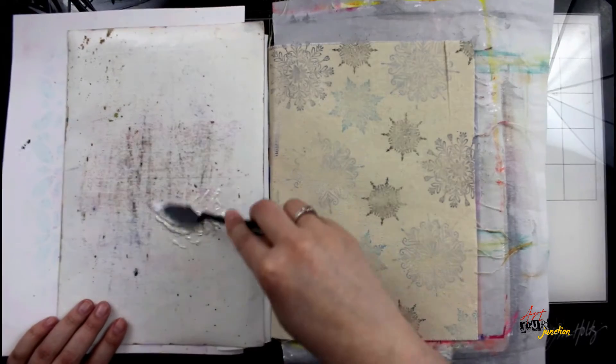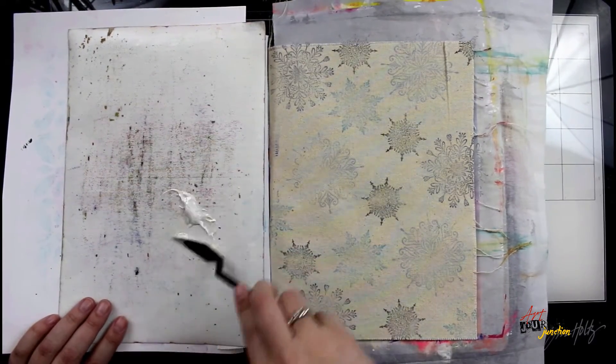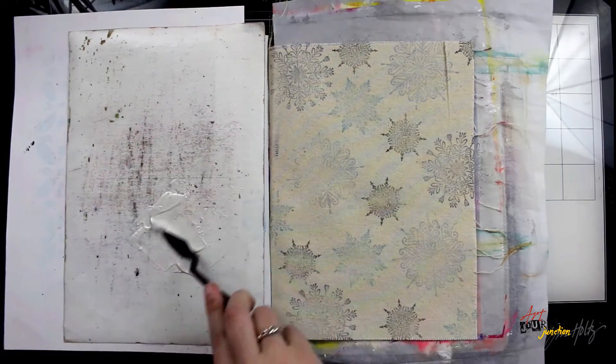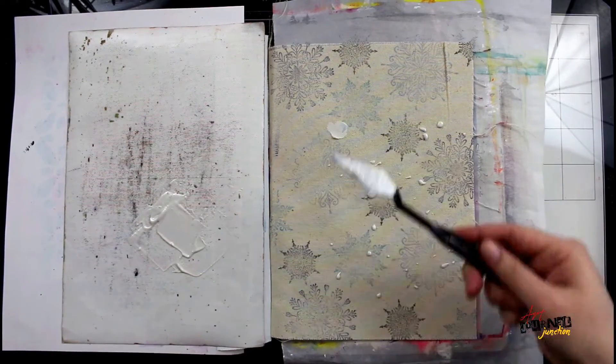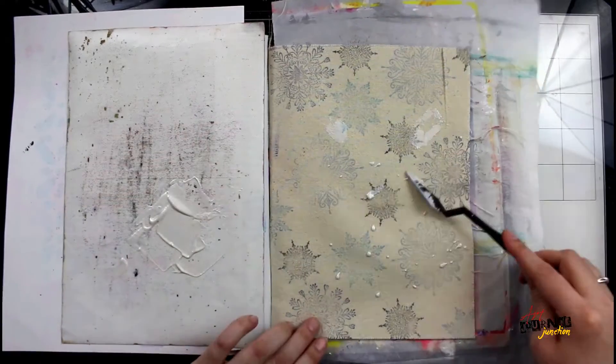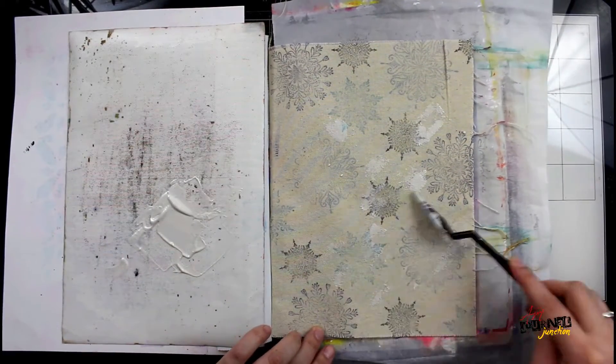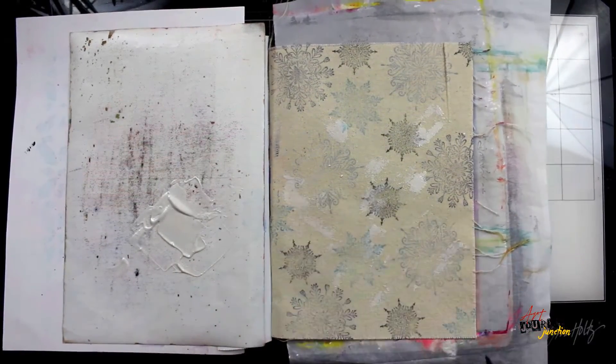And now I'm going to add just a little bit of icy sparkle with TCW stencil butter in white. I've added some water to it to make it a little bit thinner, and then I'm flicking it onto the page and spreading it out with my palette knife so I have this icy, crystal-y look over my snowflakes.